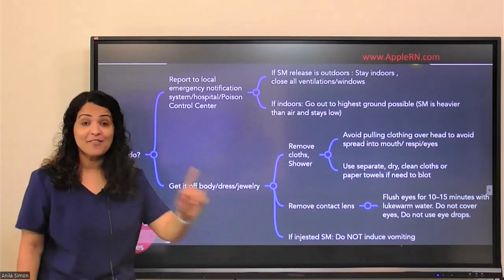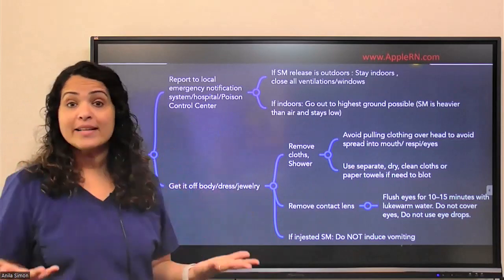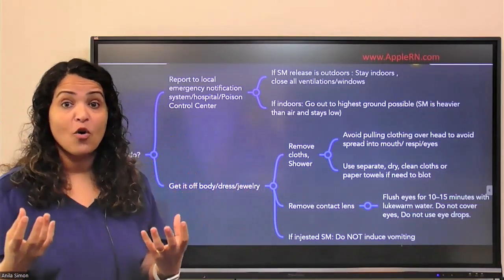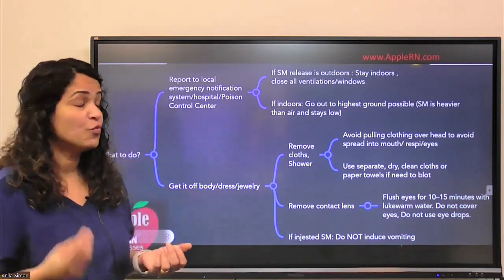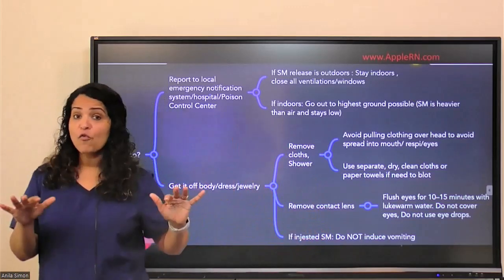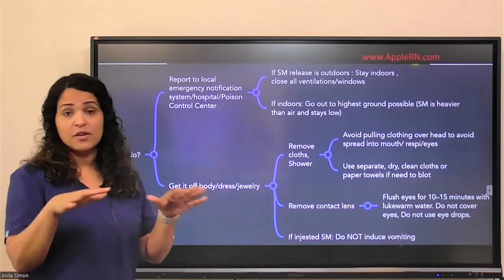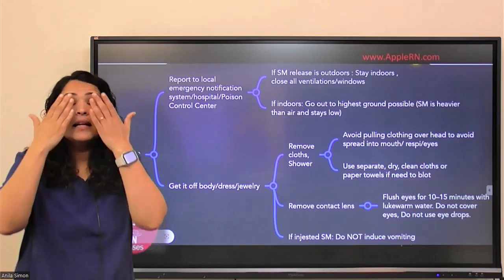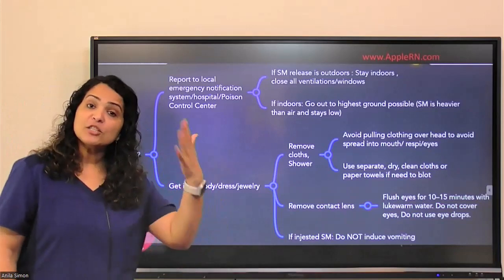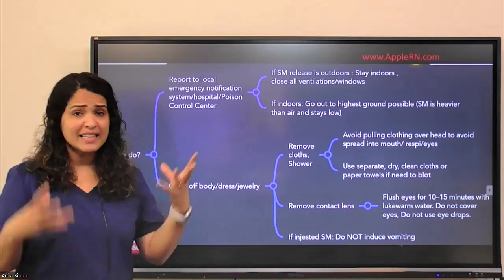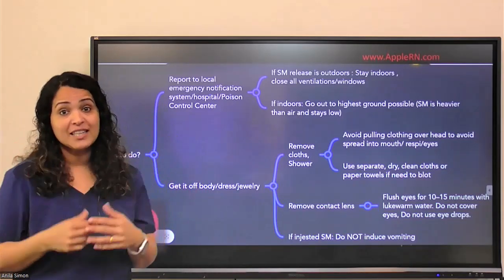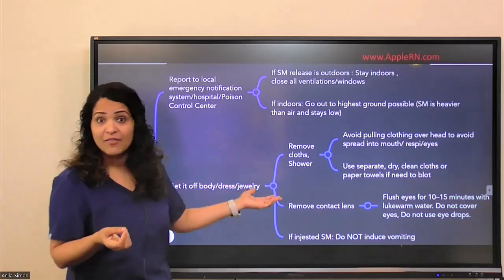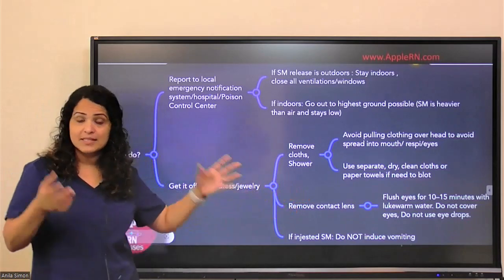For the eyes, flush them immediately with lots of clean fresh water to prevent corneal ulceration and injury. Flush the eyes for at least 10 to 15 minutes with lukewarm water — no need for ice cold or very warm water, just plain fresh water. Do not cover the eyes or put eye patches on, because we need to let the chemical escape. Patients may have increased lacrimation — watery eyes and itching — but don't let them rub, just keep flushing. If they have contact lenses, remove and discard them, as they may already contain Sulphur Mustard. Do not use eye drops — just flush.